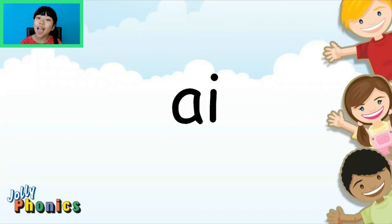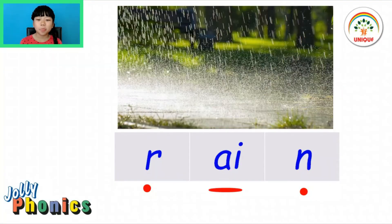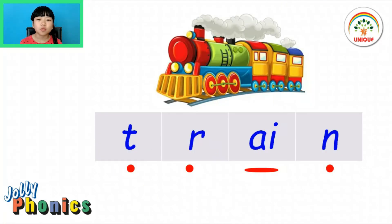A-I. A-I is a digraph. R-A-I-N: rain. R-A-I-N: rain. T-R-A-I-N: train. T-R-A-I-N: train.